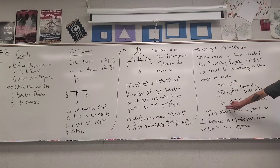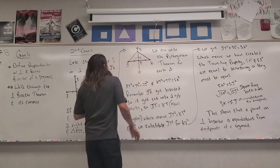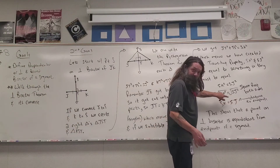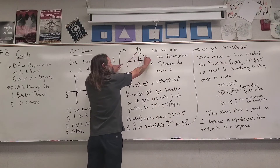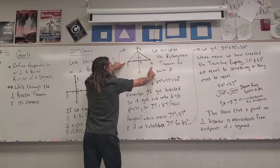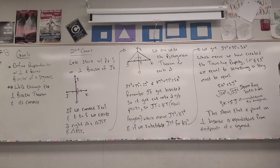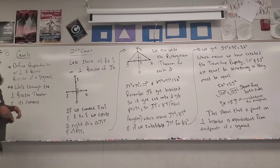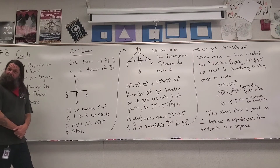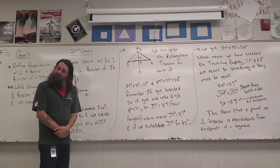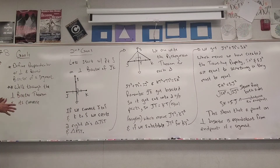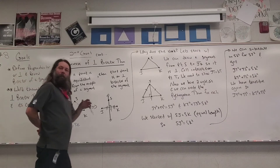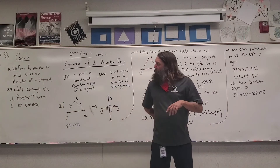These lengths are the distances to the endpoints. The theorem says if a point is on the perpendicular bisector, it's the same distance from both endpoints. We've argued that point S is the same distance from J as it is from K. This shows that a point on the perpendicular bisector is equidistant from the endpoints of the segment. We argued in one direction; now we'll flip it and look at the converse.